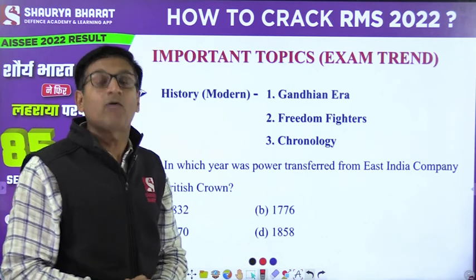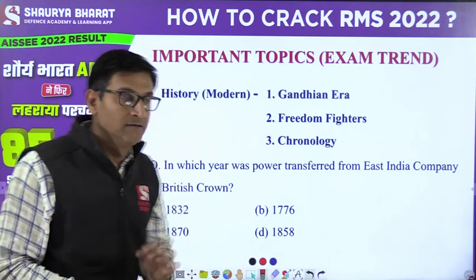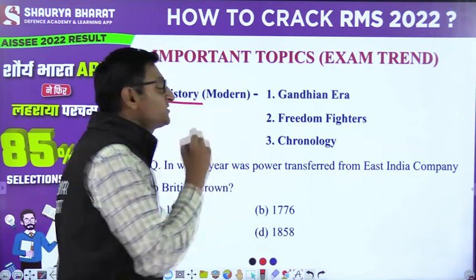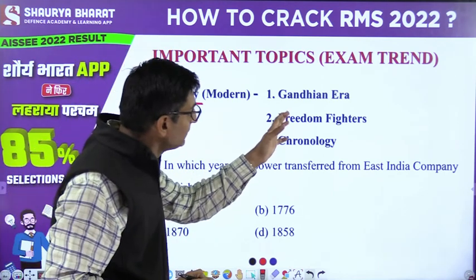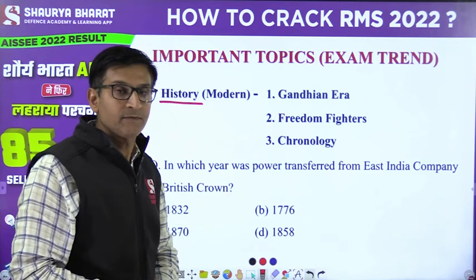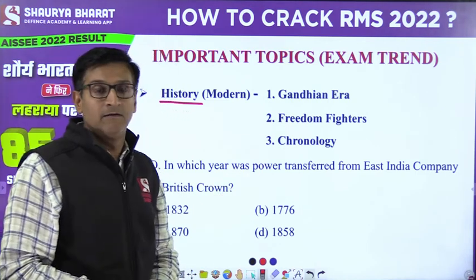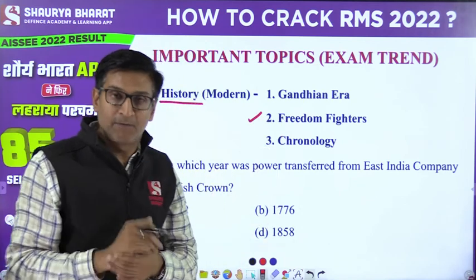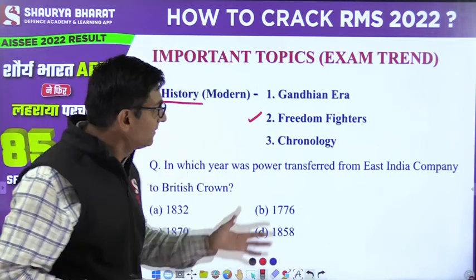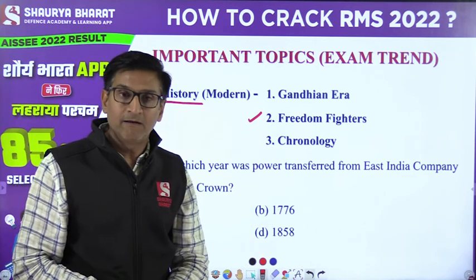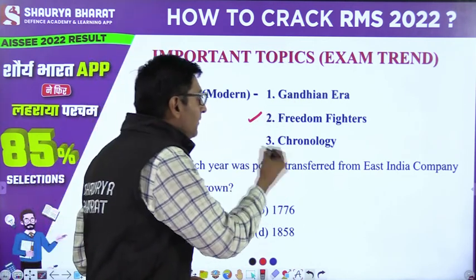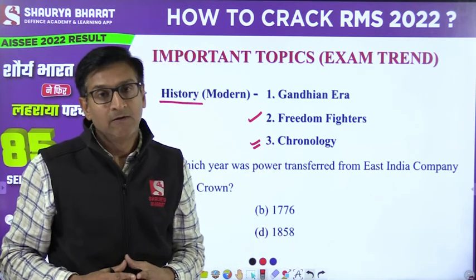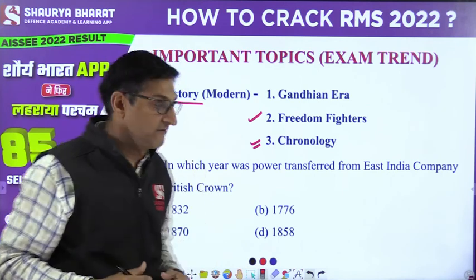Important topics according to the exam trend. From history, the larger portion is that of modern history. It contains important topics: the Gandhian era, then freedom fighters — revolutionary freedom fighters like Shahid Aajan, Bhagat Singh, Chandrasekhar Azad, Sachindra Sanyal, and also Lal, Bal, and Pal, and Mahatma Gandhi. The third topic is chronology or important events in the modern history and freedom struggle of our country.